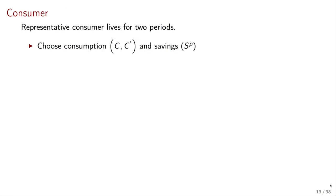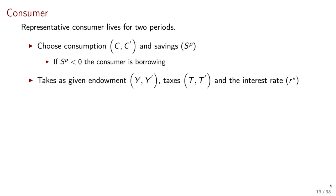There is going to be a representative consumer that lives for two periods. The consumer is going to choose consumption. That is consumption today and tomorrow, C and C prime and savings. These are going to be the private savings of the economy. We're going to denote SP. If SP is negative, that means that the consumer is borrowing. So there is no sense in which they have to be savings. They can be borrowing. The consumer is taken as given the endowment. It gets Y and Y prime. The tax that it has to pay T and T prime and the interest rate, which we're going to call R star. The star stands for the international market interest rate.